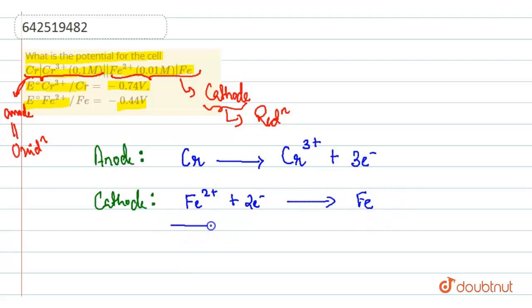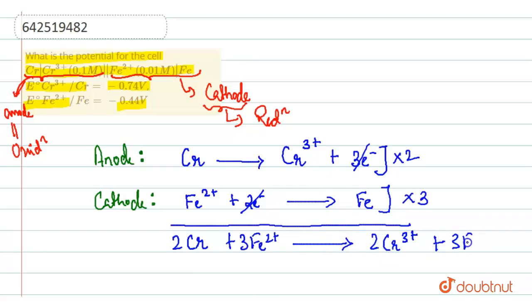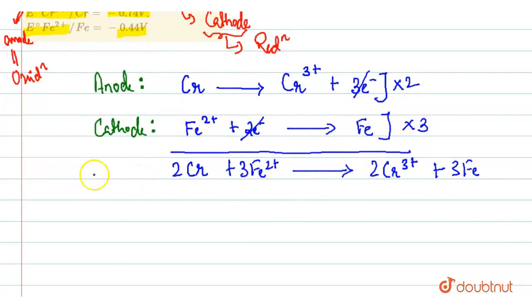Now, you have to see the overall reaction. These are basically the half cell reactions. To cancel out the electrons, you have to multiply it by 3 and multiply it by 2. So, you will get 2Cr plus 3Fe2+ plus 6 electrons and 6 electrons can be canceled out. This will form 2Cr3+ plus 3Fe. This will be your overall cell reaction.